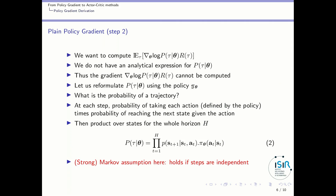To compute our gradient, we want to compute this expression. The problem is that we don't have an analytical expression for the probability of the trajectory given the policy parameters. It is very complicated to get the probability of a particular trajectory of a robot given the parameters of its controller. Since we don't have this analytical expression, we cannot compute the gradient directly. So let's use the additional information and reformulate the probability of a trajectory given policy parameters using the policy itself.